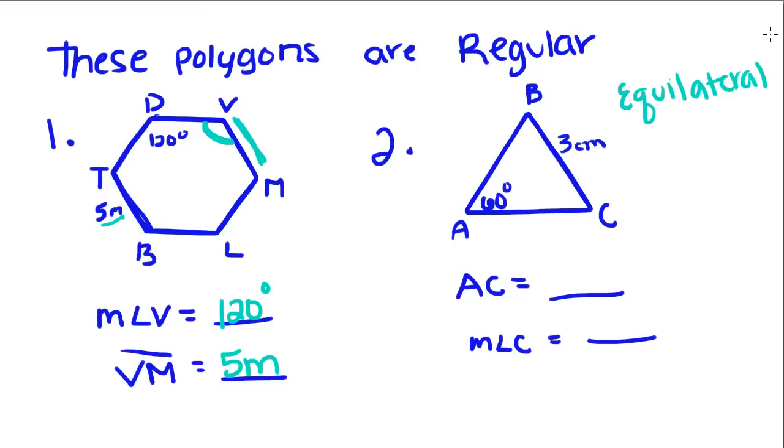If you remember, when we learned about equilateral triangles, we said that they had congruent sides and congruent angles. So that's what we call it if we have a regular triangle, an equilateral triangle.